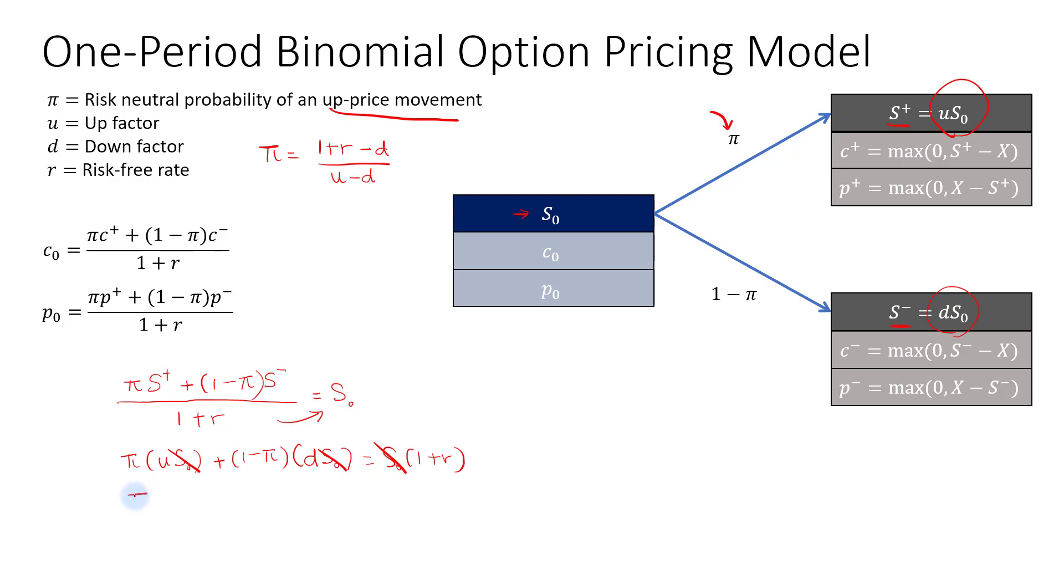So that leaves us with pi U plus 1 times D, so that's D minus pi D equals to 1 plus R. So now we need to group up pi on the left-hand side, so we have pi U and minus pi D, so that will be pi multiplied by U minus D. And then for D, we'll move it to the right-hand side, so we have 1 plus R minus D.